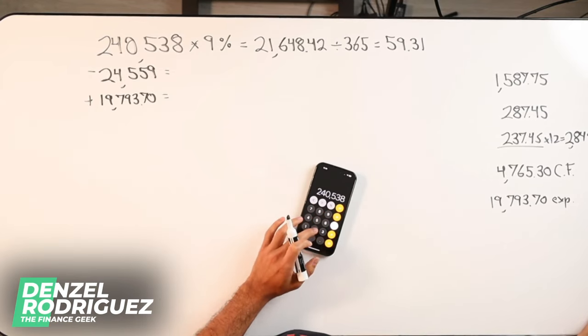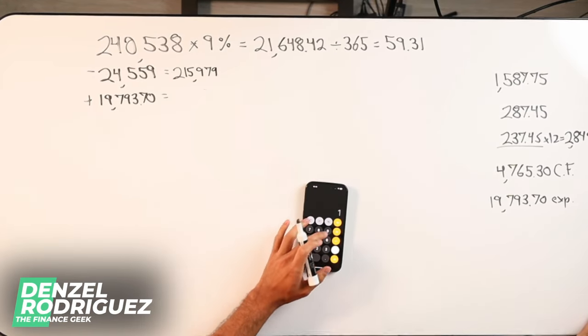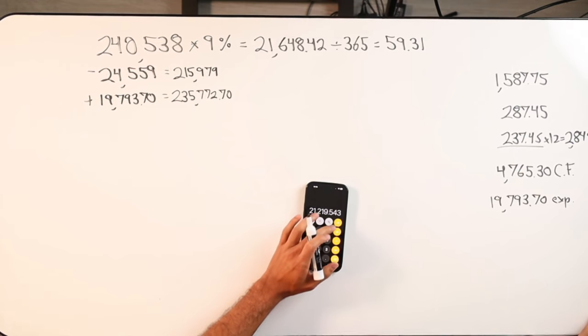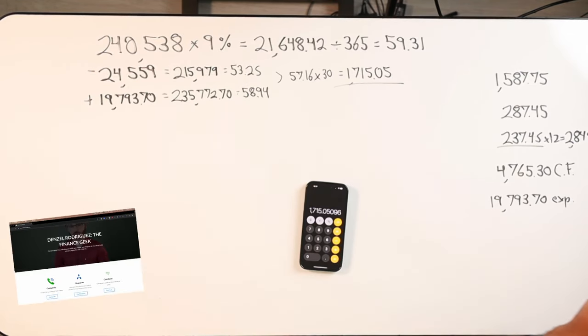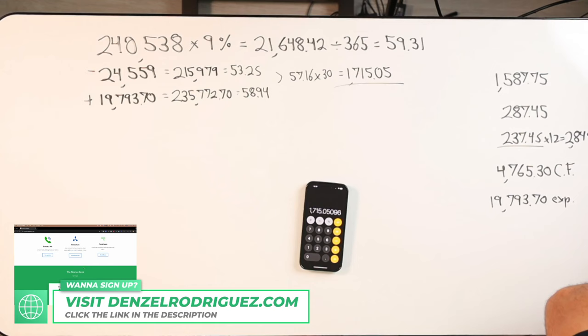240,538 minus income plus expenses, and we're using that 9% rate. So 1,707,150.05.